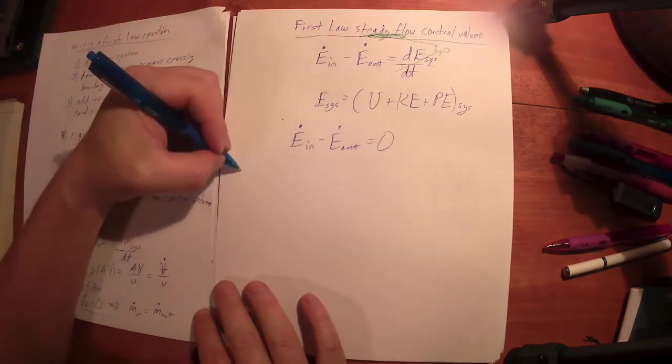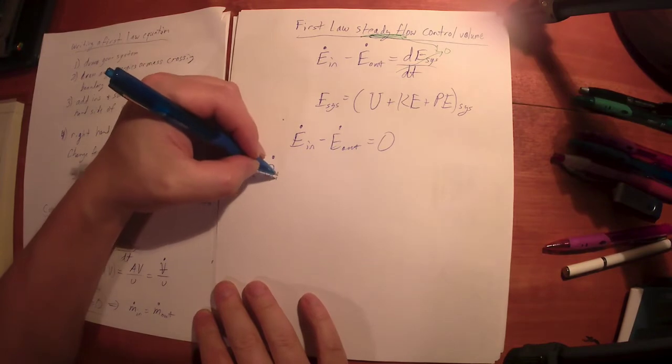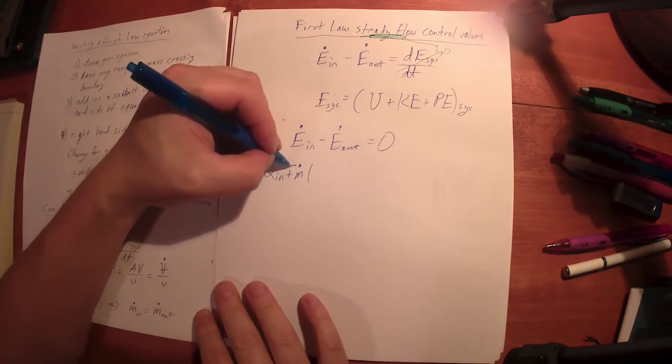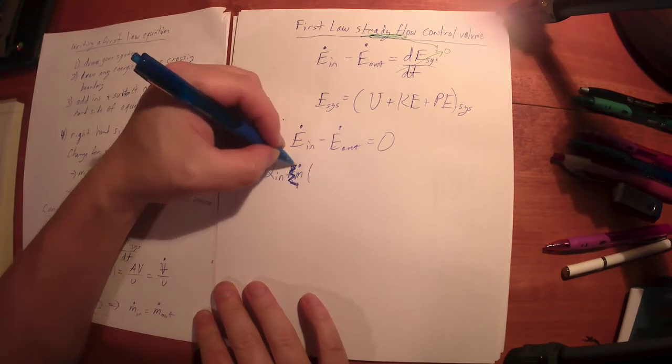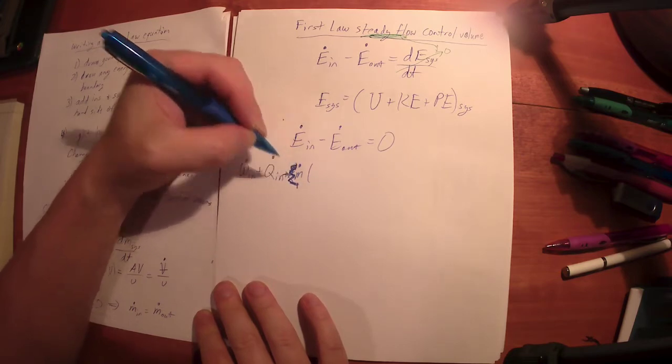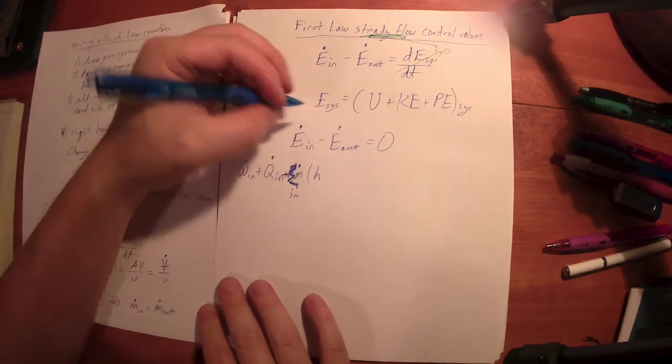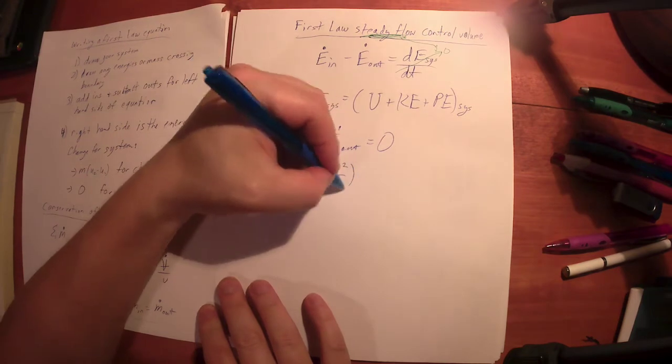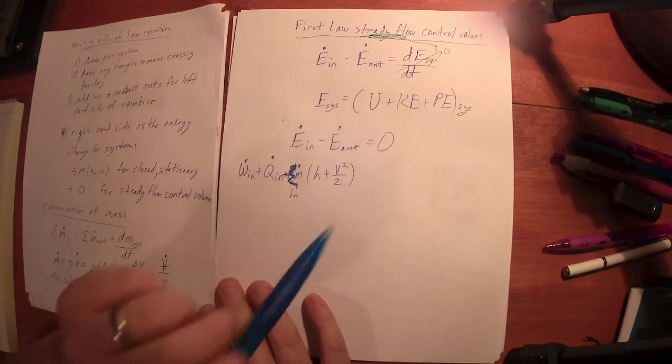What are the ways that energy can cross the boundary? It could be power, that's the work rate. It could be a heat rate. So that's W dot in plus Q dot in plus m dot times - you really need a summation in there. Summation across all inlets: the mass flow rate times the enthalpy plus the kinetic energy. I'm going to leave off the potential energy - you could write it, it's not going to hurt anything, but as we've seen it's normally negligible. The enthalpy and the kinetic energy.